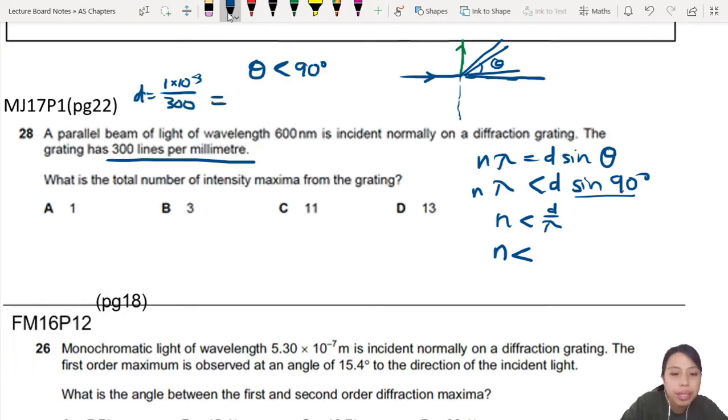You can use this d value in your calculation. Lambda is 600 nanometers, so 600 times 10^-9. If you do